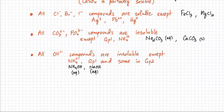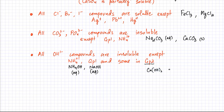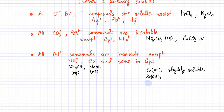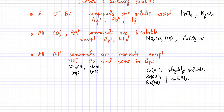Some Group 2 hydroxides are also soluble. Calcium hydroxide is only partially soluble. But as you move down Group 2, strontium hydroxide and barium hydroxide have much greater solubility — they would be soluble. So solubility increases as you move down the group. Apart from ammonium hydroxide, Group 1 hydroxides, and these select Group 2 hydroxides, all other hydroxides are insoluble.